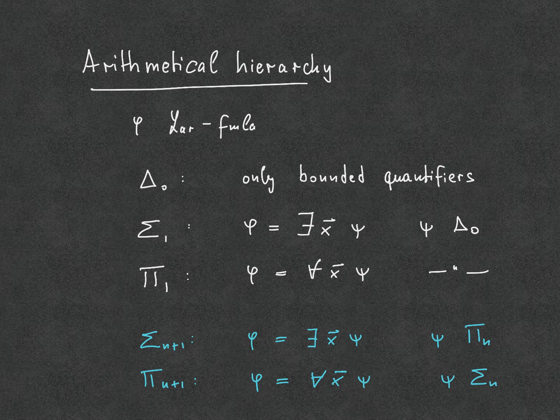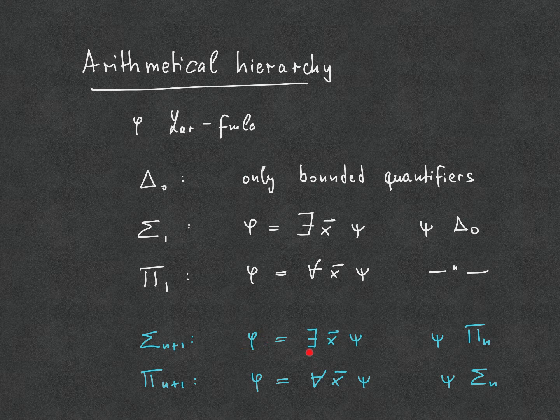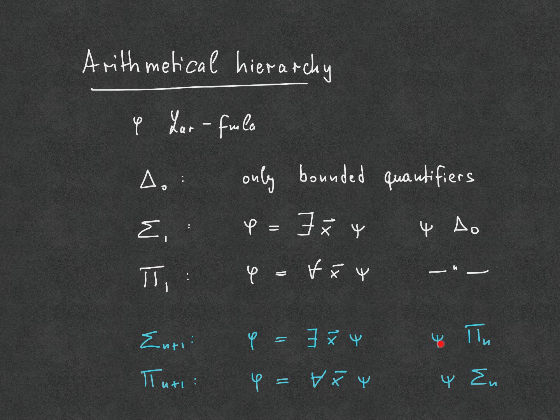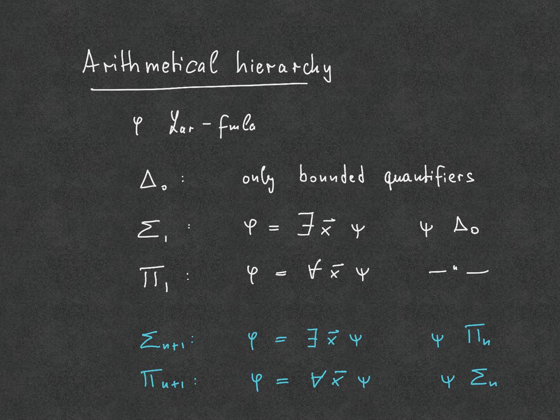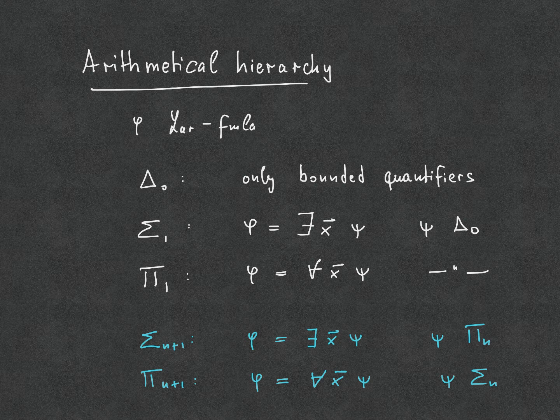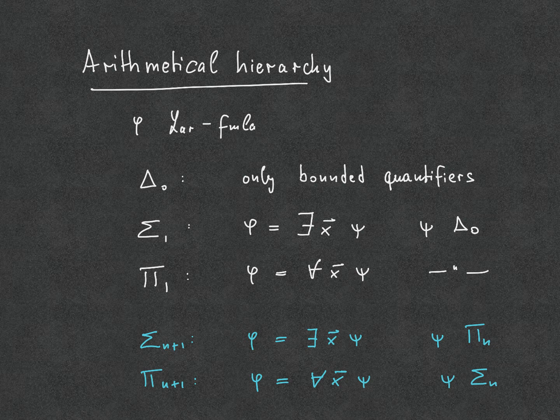We can continue this now, counting the quantifier changes in the formula, and this way get sigma-n-plus-1 and pi-n-plus-1 formulas, where phi exists of the form exists x psi with psi pi-n would be a sigma-n-plus-1 formula. So you would count the number of quantifier changes to determine the level of the formula in the arithmetical hierarchy.